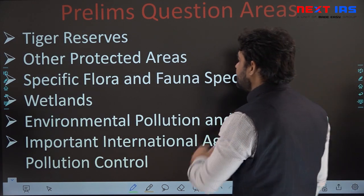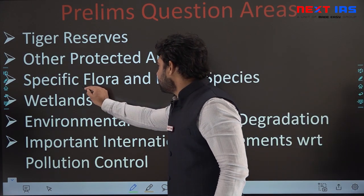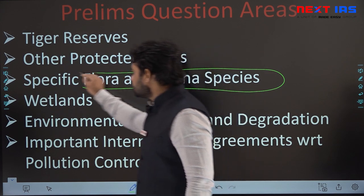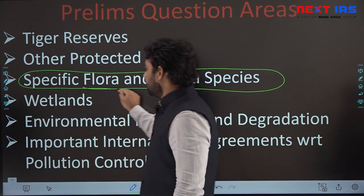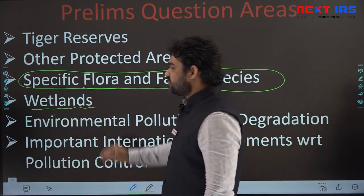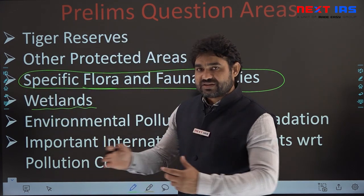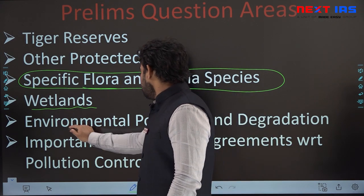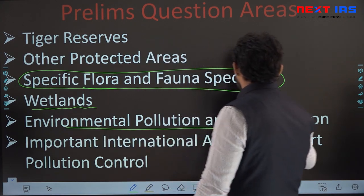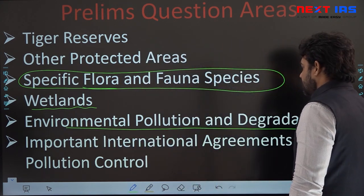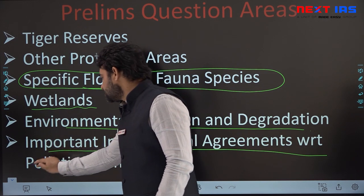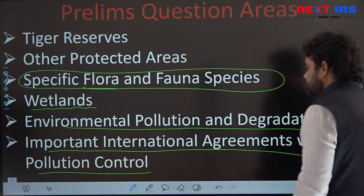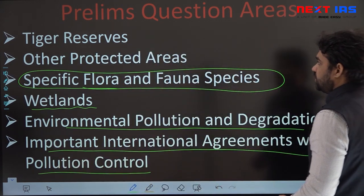Tiger reserves, other protected areas, and specific flora and fauna are important areas. Wetlands and the Ramsar Convention on wetlands along with associated aspects are one area. Environmental pollution and degradation, along with important international agreements on pollution control, is another area.